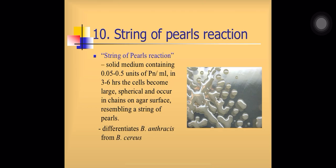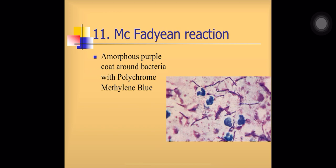String of pearl reaction is another property of Bacillus anthracis. When you grow Bacillus anthracis in a solid medium containing penicillin, the cells become large and spherical and occur in chains on the agar surface — the appearance looks like a string of pearls. This property is used to differentiate between Bacillus anthracis and Bacillus cereus. In McFadden reaction, when you stain the chains of Bacillus anthracis with polychrome methylene blue, you can see an abundant purple coat around the bacteria — this purple material is the capsule.